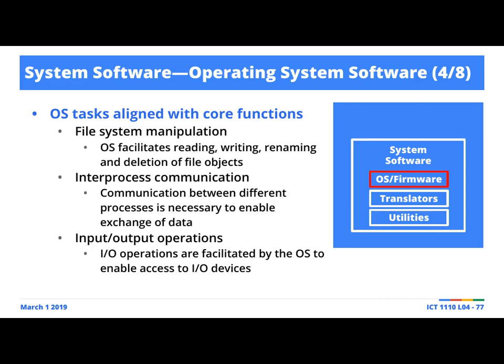There are IO operations as well — mostly associated with peripheral devices. We'll get a sense of how these things work when we look at details of how the IO subsystem interacts with the CPU. But bottom line: IO operations are facilitated by the operating system, to enable access to peripheral devices — printers, mouse, keyboard, laser pointer. When I'm pressing these things to go forward and back, the operating system facilitates this interaction between the peripheral device and the hardware.